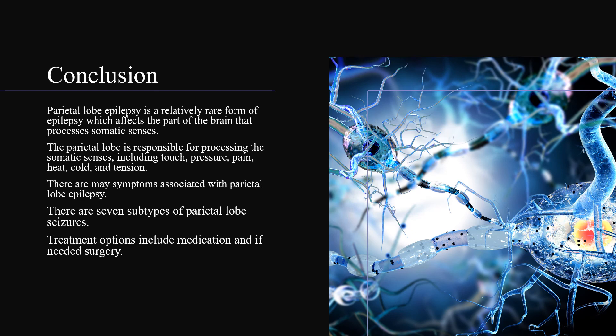Parietal lobe epilepsy is a relatively rare form of epilepsy which affects the part of the brain that processes somatic senses. The parietal lobe is responsible for processing somatic senses including touch, pressure, pain, heat, cold, and tension. There are many symptoms associated with parietal lobe epilepsy, seven subtypes of parietal lobe seizures, and treatment options include medication and, if needed, surgery.